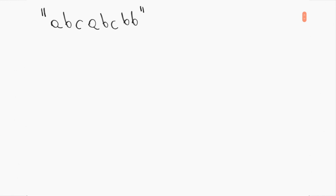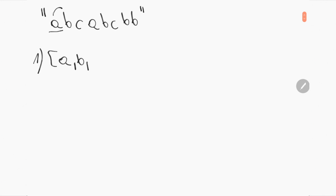We're on the whiteboard now. I've put the string as a reference. The first way to solve this problem is to use the brute force method. For each character in the string, we create a set and check all the following characters as long as there is no repeated character. Starting with the first character 'a', the set is {a}, then we check 'b' — not in the set, then 'c' — not in the set, then 'a' — already in the set, so we stop. The longest substring in this case is 3.